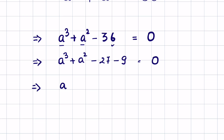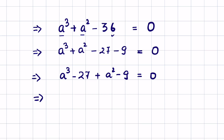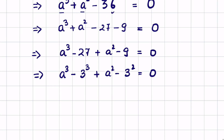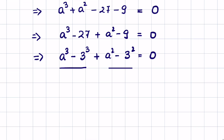Now we can rewrite it as: a cube minus 27, plus a square minus 9, is equal to 0. We write a cube minus 27 as a cube minus 3 cube, since 27 is 3 cube, and a square minus 9 as a square minus 3 square, since 9 is 3 square. This is in the form of a cube minus b cube, and the other is in the form of a square minus b square.